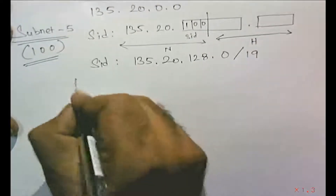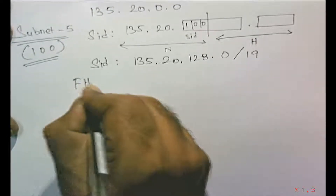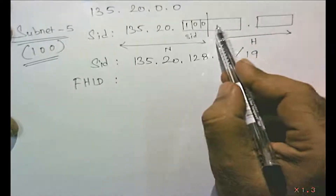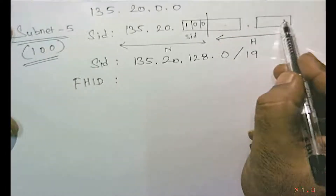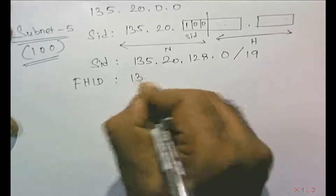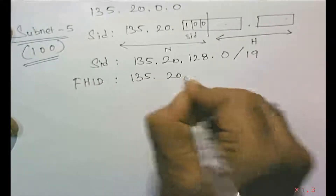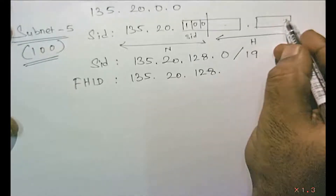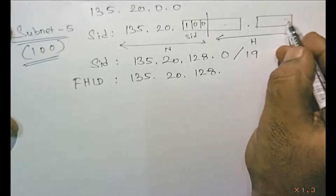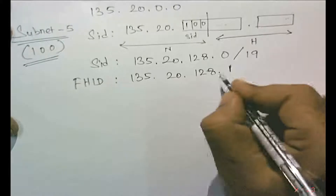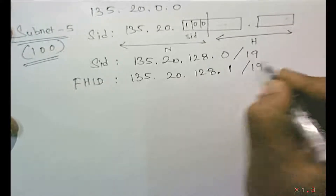First host ID for subnet 5: the formula is to make everything 0 with the last bit as 1. So the first host ID is 135.20.128.1/19.